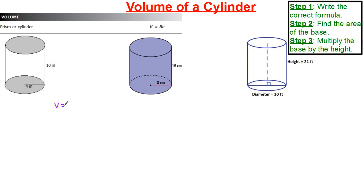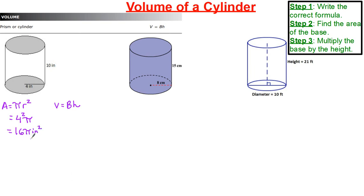Volume equals base times height — same for all of them. The only difference is our area formulas. Area equals pi r squared. We're not going to evaluate pi until the very end — that makes the math easier. r squared is 4 squared. Put the constant in front of pi: 4 times 4 is 16, so we have 16 pi inches squared as our area.